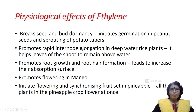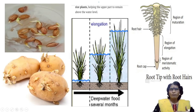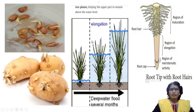Ethylene promotes rapid internode elongation in deep water rice plants. Rice plants normally grow in standing water, but due to heavy rains the water level in rice crop fields rises. As the water level rises, the rice plant stem length automatically elongates to keep pace. This stem elongation is caused by the activity of ethylene, because the leaves need to stay above the water level.